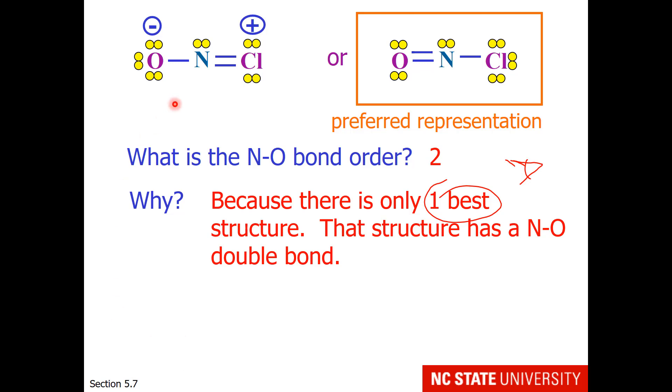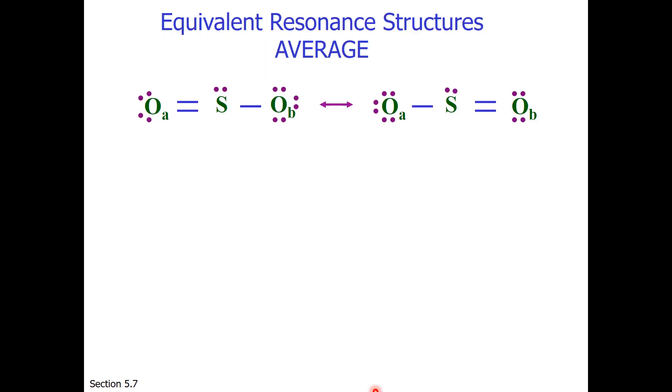Now that doesn't mean the structure on the left can't contribute a little bit to what the true structure looks like. But this structure is our best representation and our closest approximation to what NOCl looks like. As a reminder, when you have equivalent resonance structures, the bond order can be averaged.